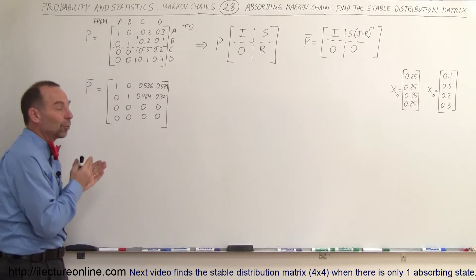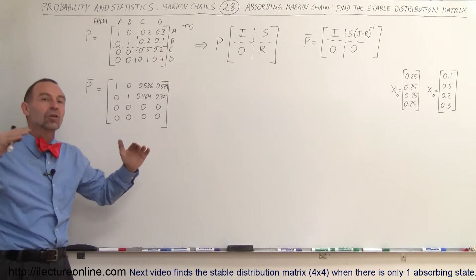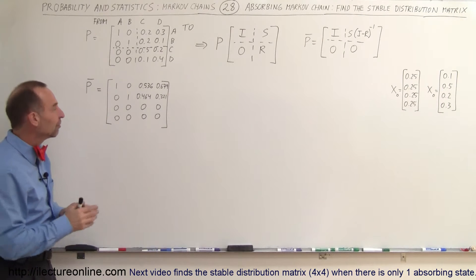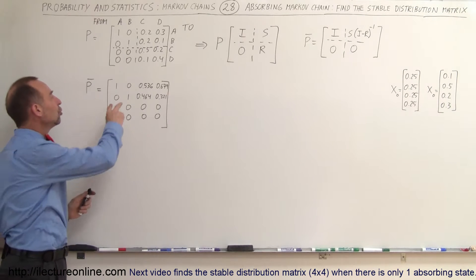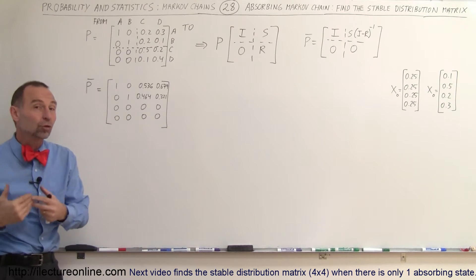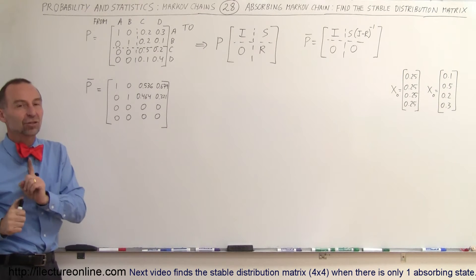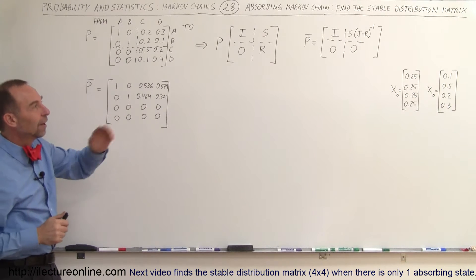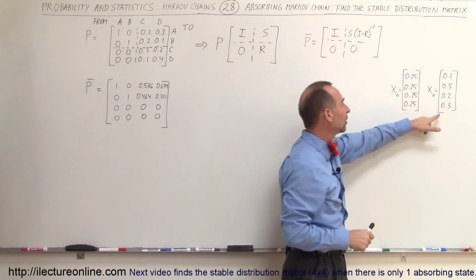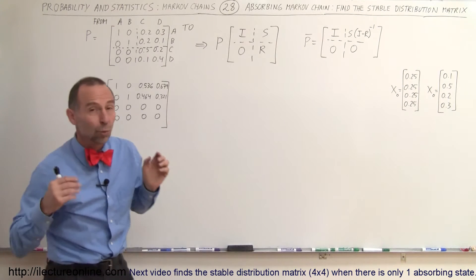In the case that you only have one absorbing state the result is always easy — that one state gets all the population and all the other states get none. But if there are two or more absorbing states, the population gets distributed among those states, and how they're distributed depends upon the initial distribution matrix.